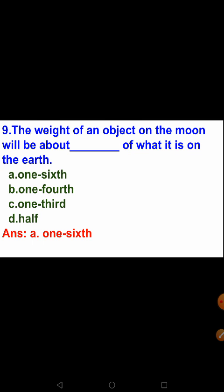Fill in the blank: the weight of an object on the moon will be about dash of what it is on the earth. The options are one-sixth, one-fourth, one-third, and half. We covered this when doing numericals — the weight of an object on the moon is about one-sixth of what it is on the earth. The correct answer is option A, one-sixth.